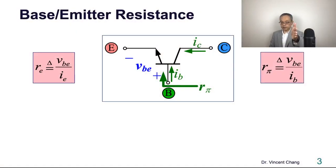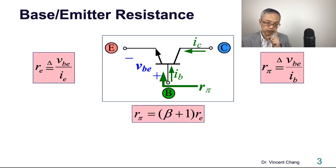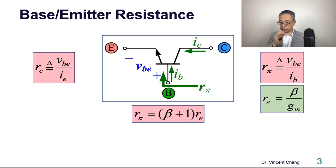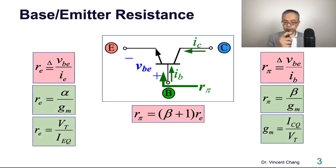The first one is the resistance between base and emitter looking into the emitter. On your right is the resistance between base and emitter looking into base. These two resistances have this relationship: Rpi equals one plus beta times RE. Who decides the gm? The bias current. Same thing with RE. So I expect you are very familiar with this before we move forward.